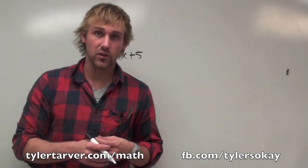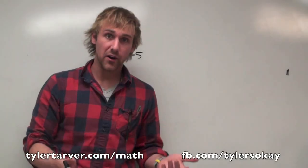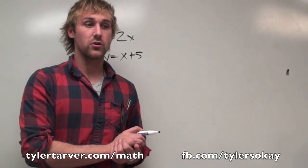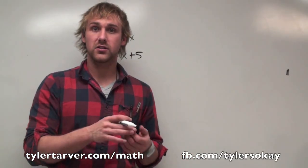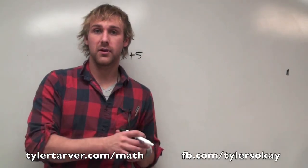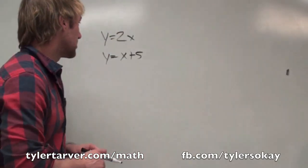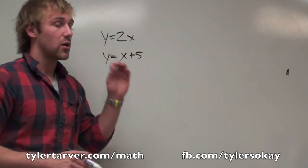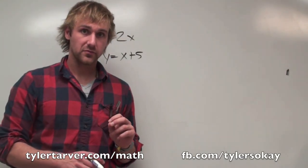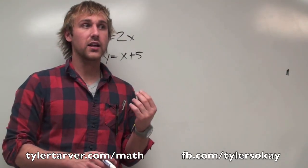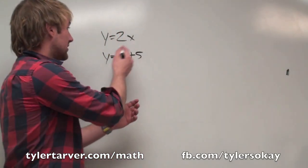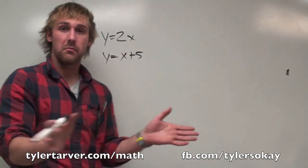Hopefully at this point you've learned how to solve by graph — type into your calculator, go to calculate intersection, and you can find where they cross. Now we're doing it mathematically: substitution. The first step to solve by substitution, you've got to get an x or a y — any of the four x's and y's — by themselves.